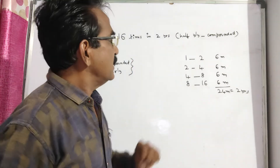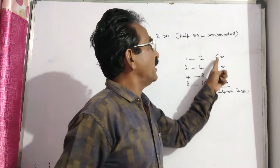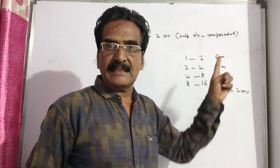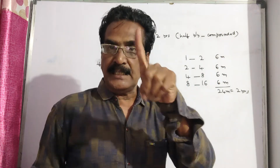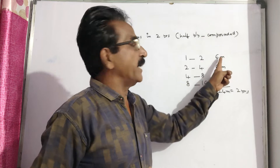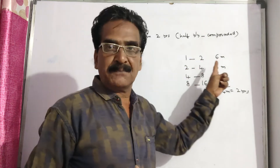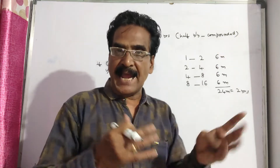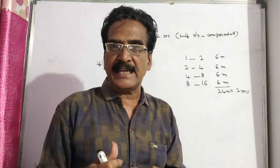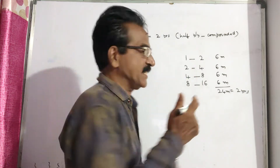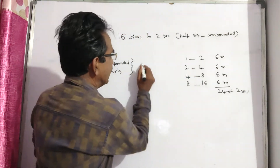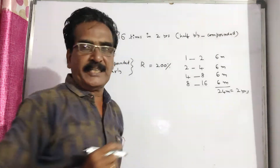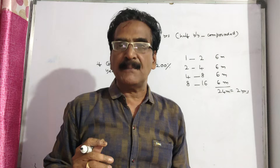If half-yearly compounded, 1 becomes 2 in 6 months, meaning the rate of interest is 100% half-yearly. If compounded annually, then the rate of interest will be 200%. A rate of interest of 200% means the amount will be tripled.